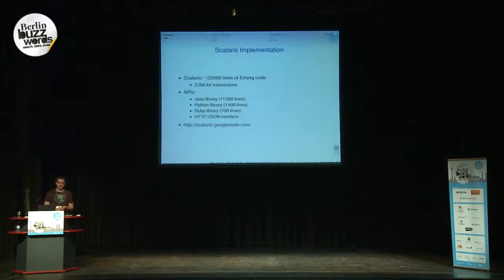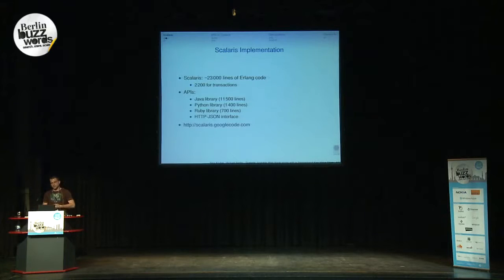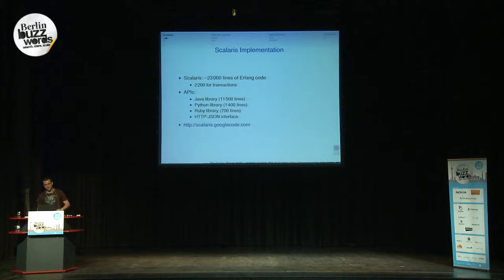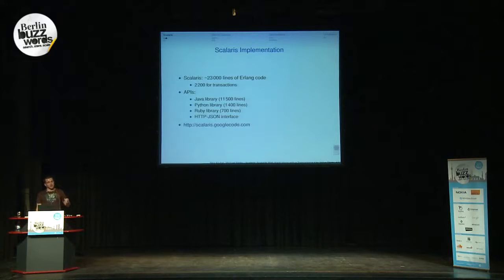Some short facts about Scalaris and its implementation: it's written in Erlang, not the most common programming language. There are around 23,000 lines of code, and only around 2,000 of them are used for transactions. Because most of the world doesn't use Erlang, we have several APIs — Java, Python, Ruby, and a generic HTTP interface. And it's all open source.